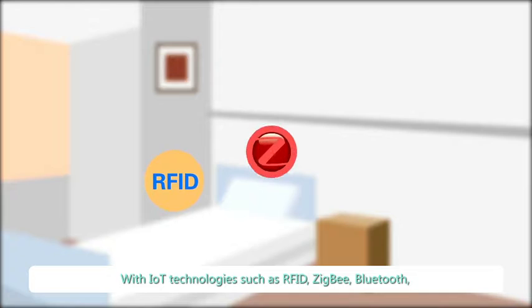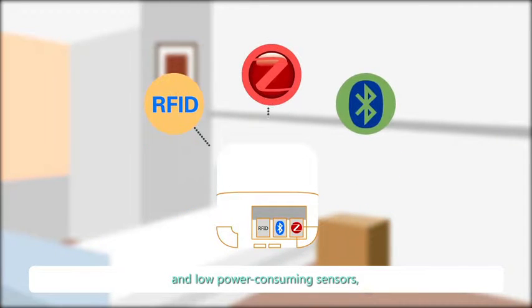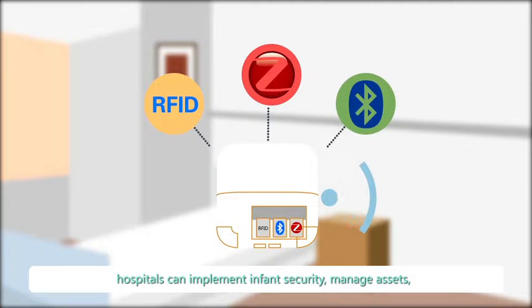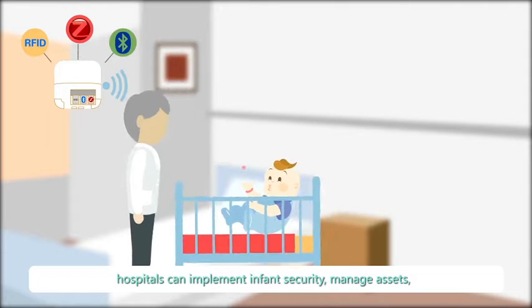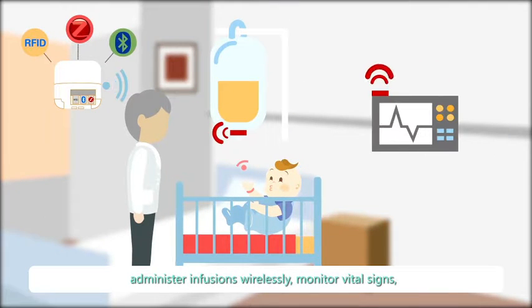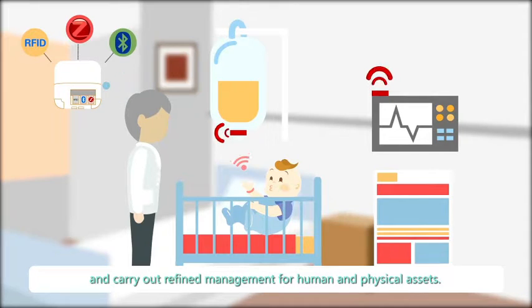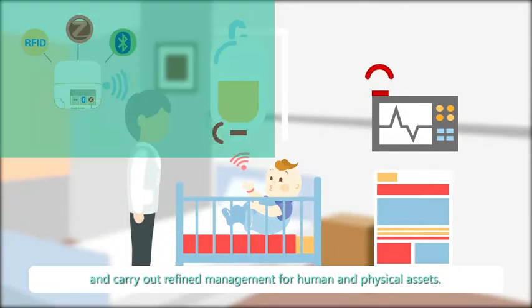With IoT technologies such as RFID, ZigBee, Bluetooth, and low-power consuming sensors, hospitals can implement infant security, manage assets, administer infusions wirelessly, monitor vital signs, and perform refined management for human and physical assets.